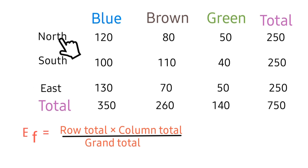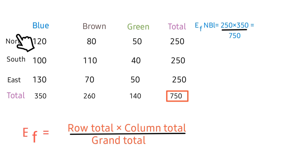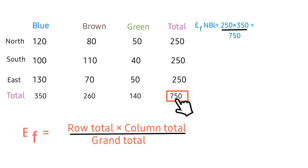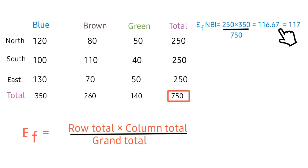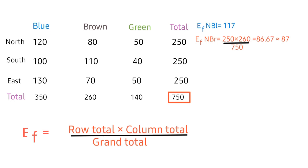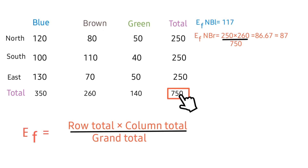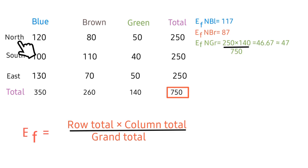The expected frequency for individuals in the northern region with blue eye color: row total is 250, times column total 350, divided by grand total 750, giving approximately 117. For the northern region with brown eye color: row total 250 times column total divided by grand total gives approximately 87. For the northern region with green eye color: row total 250 times column total 140 divided by grand total gives approximately 47.